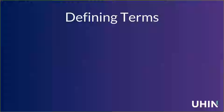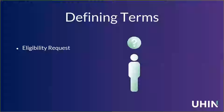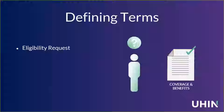First up, let's start with defining those terms, beginning with the biggest, easiest one: eligibility request. An eligibility request, broken down to its most basic idea, is about figuring out whether the payer recognizes this person — this patient or subscriber — and if they do, whether they are covered with some sort of coverage and benefits for the service in question. For today's purposes, because I'm talking about electronic eligibility, go ahead and assume that if I use the term eligibility request, I'm referring to the electronic eligibility request.